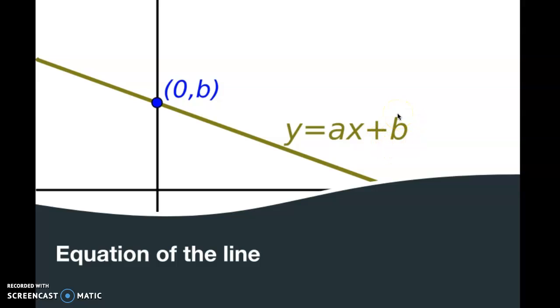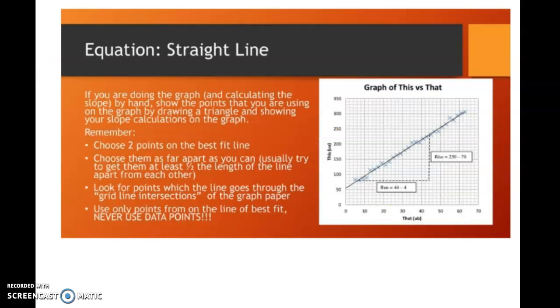So the two really important points that we have to get from our graph are the slope or gradient and the intercept on the y-axis. Now I'm going to go over how to do this by hand initially because for your paper three you would need to be able to demonstrate that you can do this. So it's a skill that you need to be able to demonstrate very clearly.